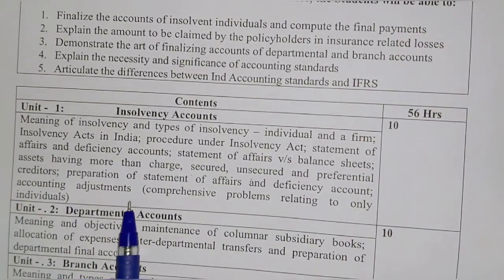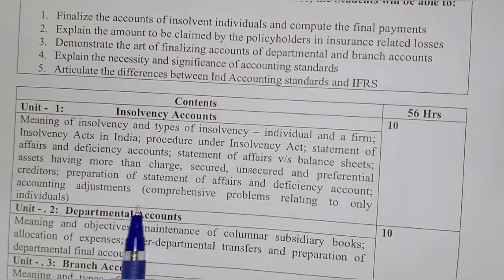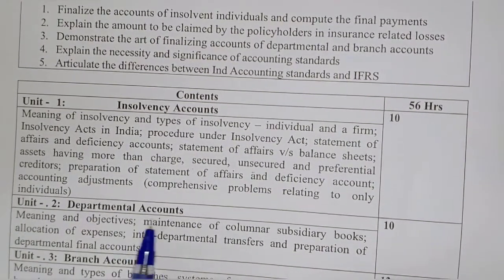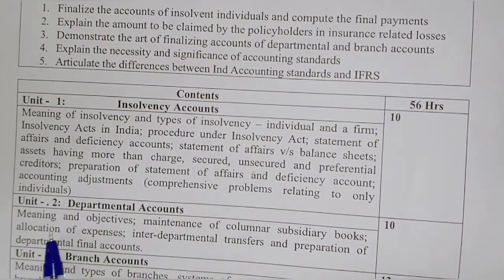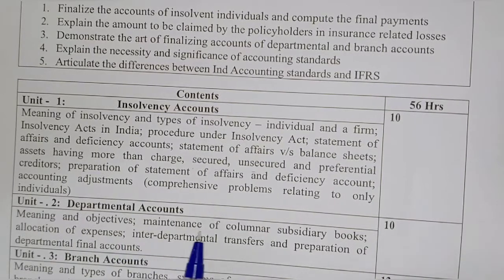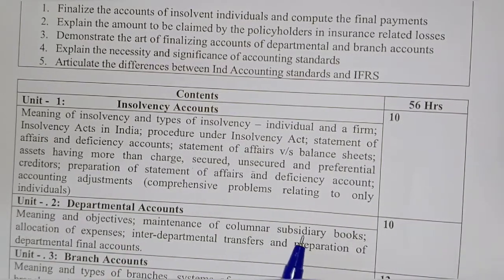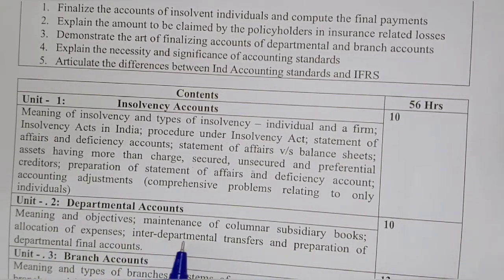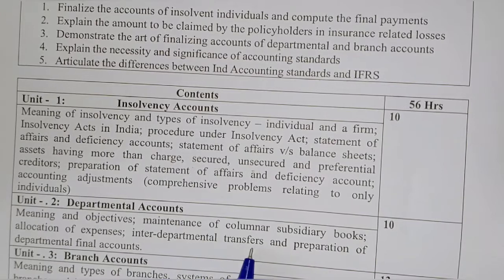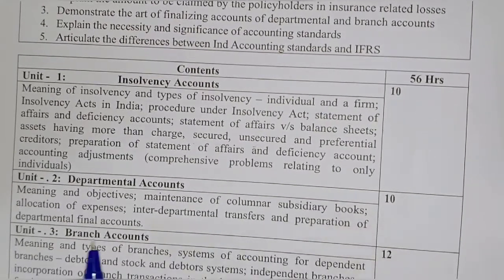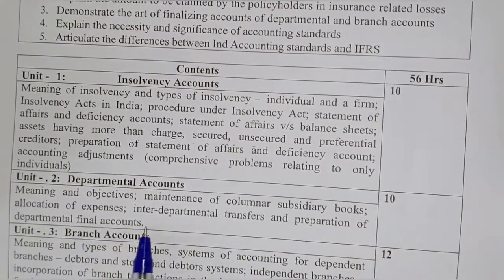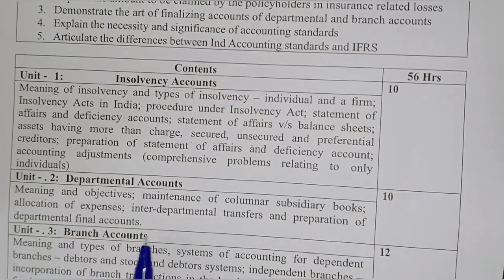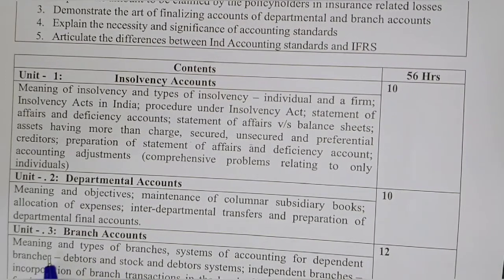Unit number two is Departmental Accounts. This covers meaning and objectives, maintenance of columnar subsidiary books, allocation of expenses, interdepartmental transfers, and preparation of departmental final accounts.